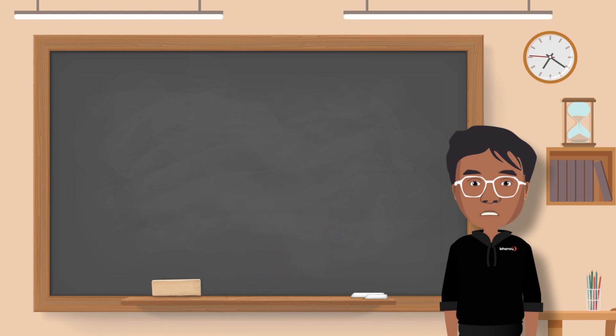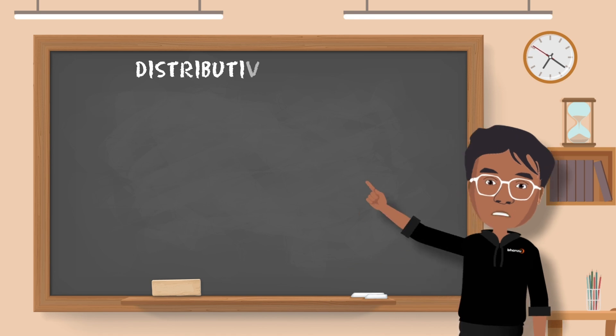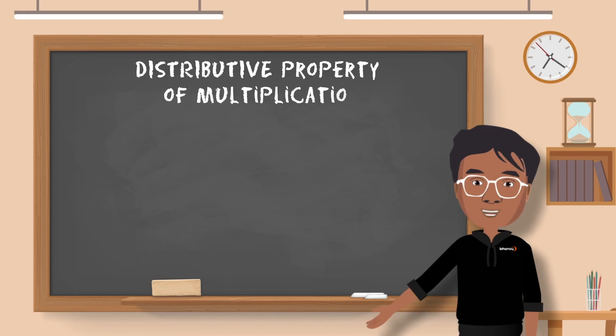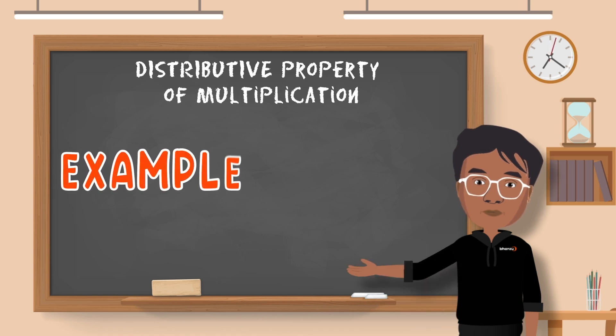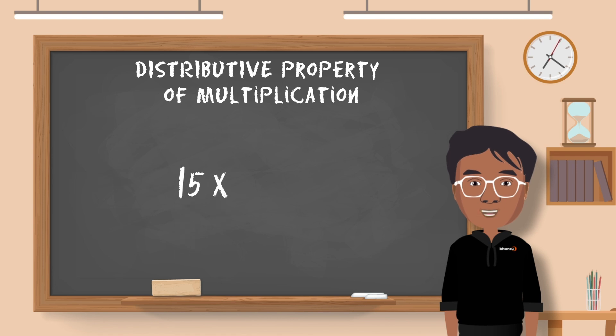Moving towards the fourth and the last property of multiplication, it is the distributive property. Let's pay more attention to this one. Because it might come handy to you while multiplying large numbers.